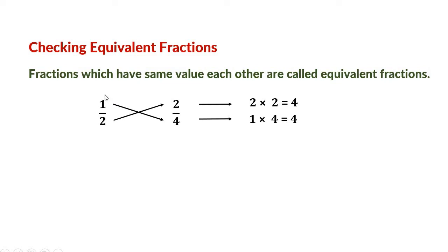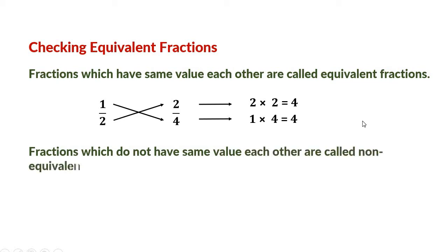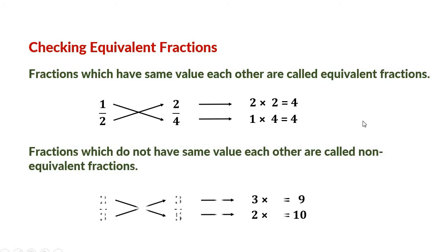Fractions which do not have the same value as each other are called non-equivalent fractions. Look at these two fractions: 2 by 3 and 3 by 5. When we multiply the denominator of the first fraction with the numerator of the second fraction — that is 3 into 3 — we get 9. Next, we multiply the numerator of the first fraction with the denominator of the second fraction — 2 into 5 equals 10. Since 9 and 10 are not the same, we can say 2 by 3 and 3 by 5 are not equivalent to each other.